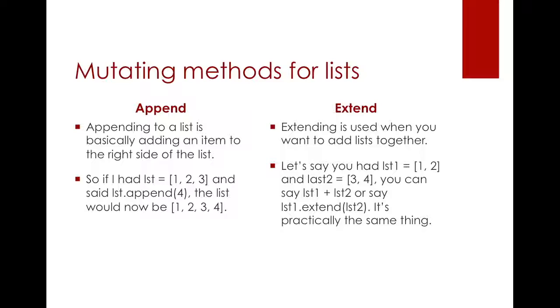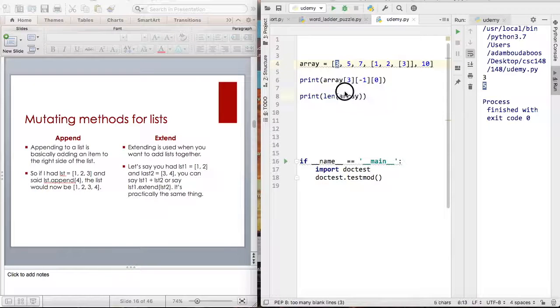There are mutating methods for lists. There are two main methods. There is append and extend. So if you wanted to add a number to the main list use append. If I had a list of 1, 2, and 3 and I wanted to add a 4, I just say list.append because append is a function. So your list is going to end up looking like 1, 2, 3, and 4. But extending is when you want to add two lists together. It's better if I show you examples.